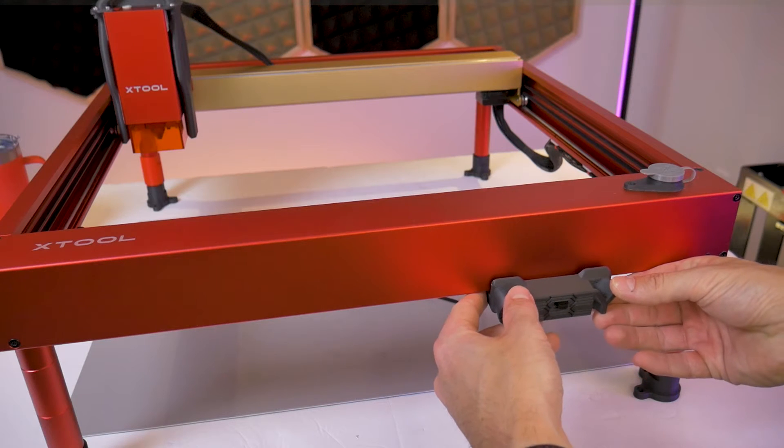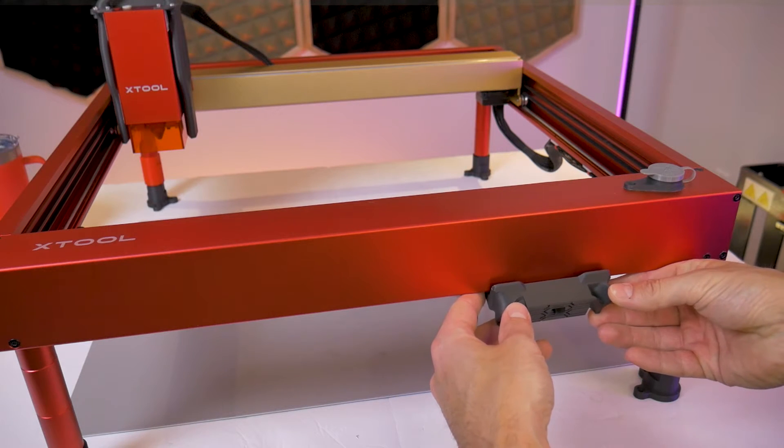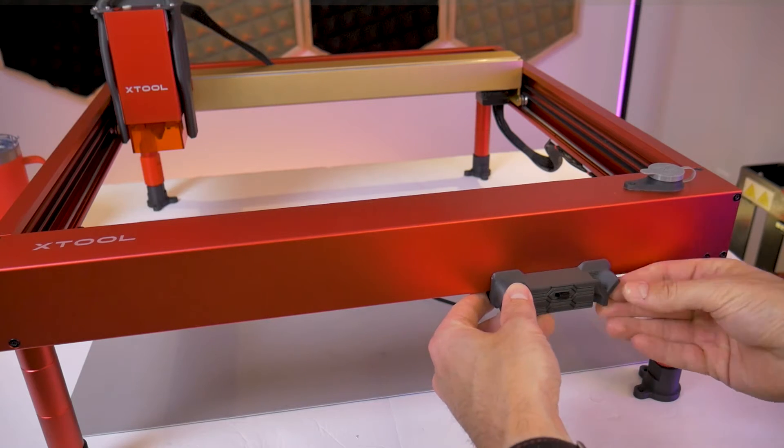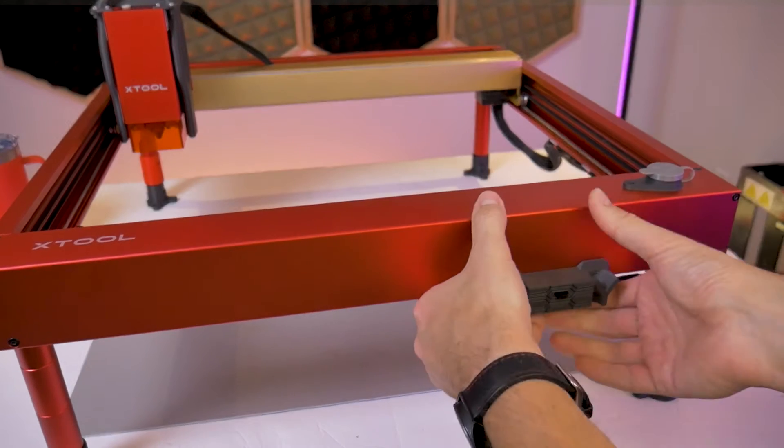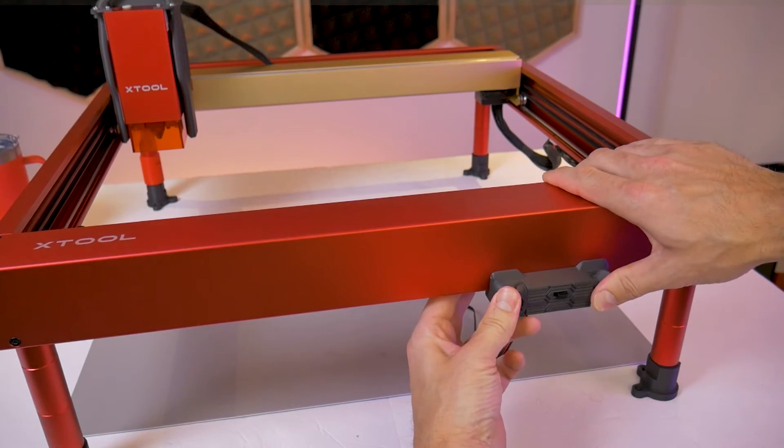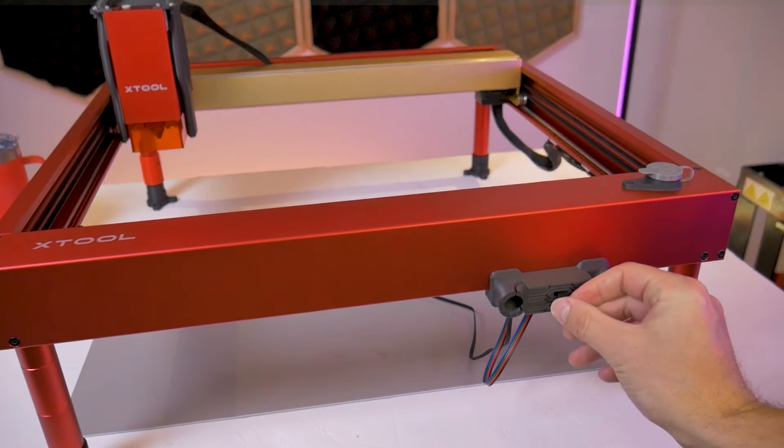That was the version 1 design which could only be mounted on the outside of the frame. This is fine in most cases, but if you're using the Xtool enclosure it fits so tightly around the D1 frame that this switch will cause the enclosure to bulge out a little bit at the front.